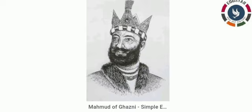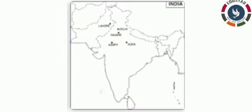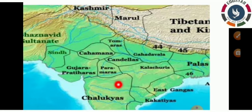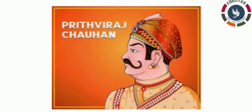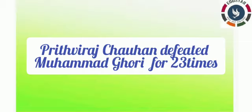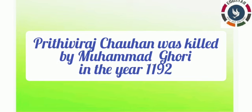In the subcontinent, the Chahamanas — later known as Chauhans — ruled over the region around Delhi and Ajmer and tried to extend their control to the west and east. They were opposed by the Chalukyas of Gujarat and the Gahadavalas of western Uttar Pradesh. A very famous Chahamana ruler was Prithviraj Chauhan III, who ruled from 1168 to 1192. He defeated the Afghan ruler Sultan Muhammad Ghori in 1191. However, in 1192, Prithviraj Chauhan was defeated and killed by Muhammad Ghori.